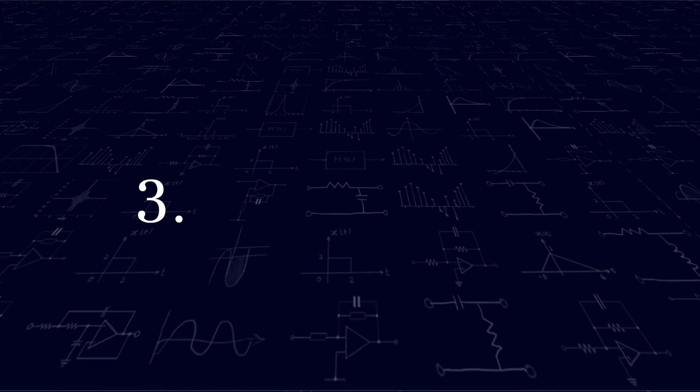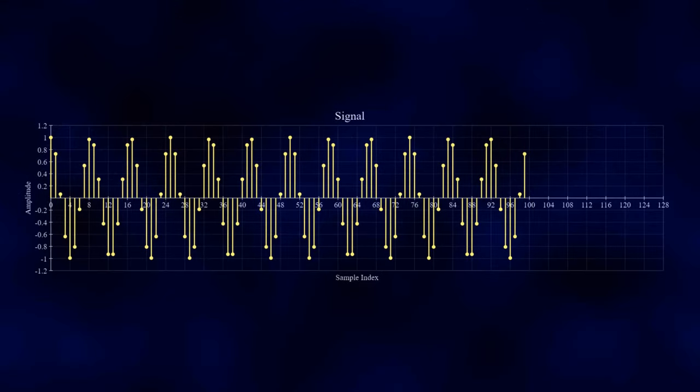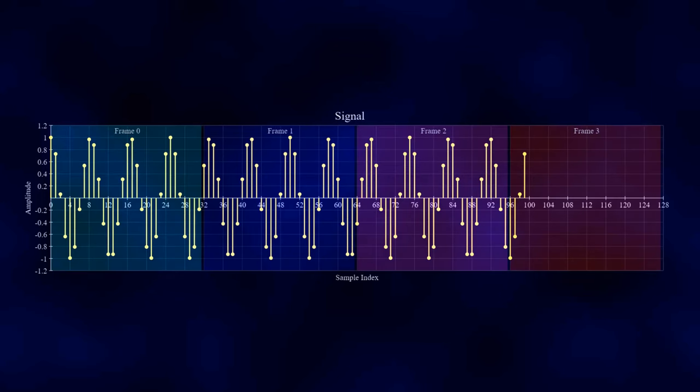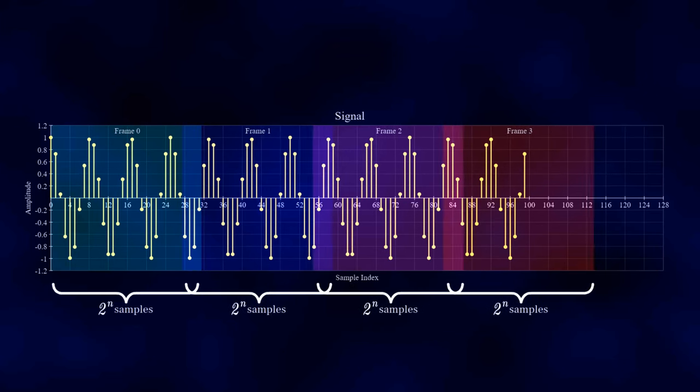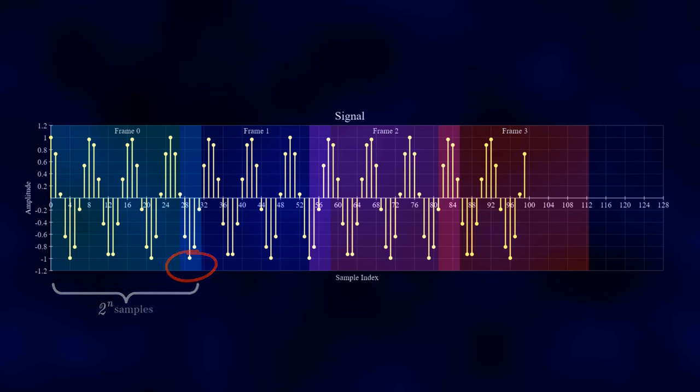Number 3: Overlap and add. The overlap and add method breaks down the signal into smaller frames. Each frame contains a number of samples that is a power of 2, but here's the clever part. The frames are overlapped, meaning that some samples from the end of one frame are processed again at the beginning of the next. This means that we can arrange our frame size and overlap factor such that the whole signal is covered with power of 2 sample long frames, just as the FFT likes.